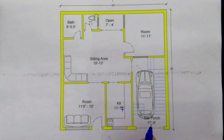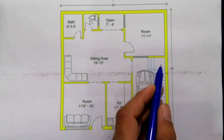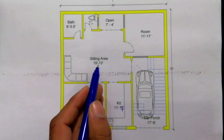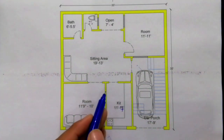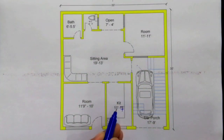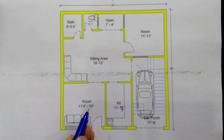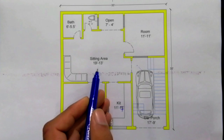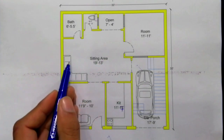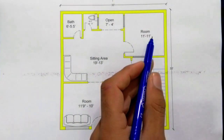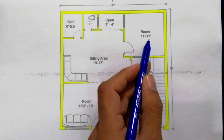You can see here the staircase for the first floor. This is the door for the sitting area and also for the other bedrooms. The first room is the kitchen, which length is 11 feet and its width is 7 feet. Next is a room which size is 11 feet 9 inches by 10 feet — you can see this is the sitting area with sofas, or you could use it as a TV lounge. This other room size is 11 by 11 feet.